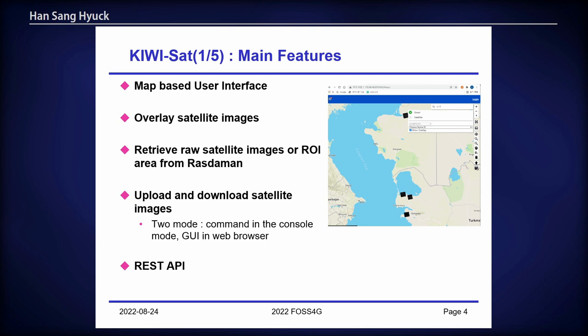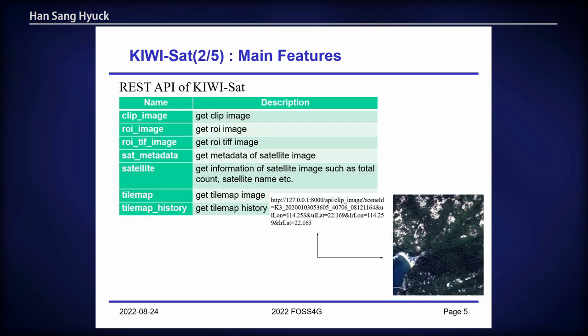QSET uses many FOSS tools: Python, Django, Mapbox, PyTorch, Rasdaman, etc. A key feature of QSET is its REST API, which can be used in a web browser and also via console command with curl. This example shows getting a clipped image of K3 with a bounding box.